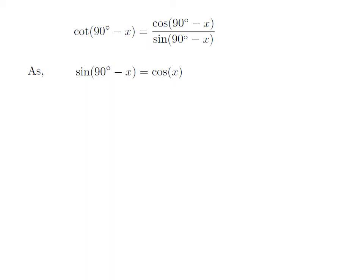As we know, the trigonometry identity sine of (90° - x) is equal to cosine of x. Also, the trigonometry identity cosine of (90° - x) is equal to sine of x. The proofs of these identities have been explained in the video appearing in the upper right corner, and the URLs have also been mentioned in the description section.